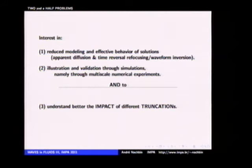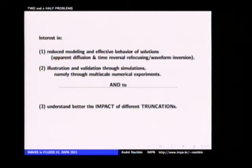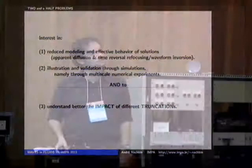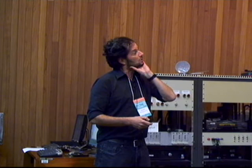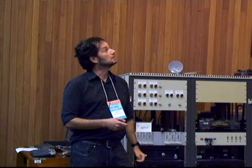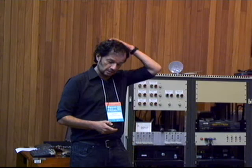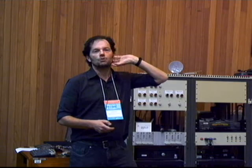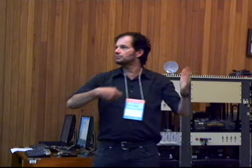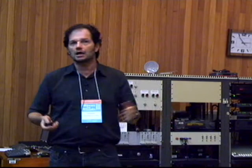My interest has been in reduced modeling — starting with potential theory and getting simplified Boussinesq-like equations in the presence of highly disordered topography. There are many interesting phenomena: apparent diffusion, time-reversal refocusing (which is the waveform inversion process to recover the initial condition), and using multiple scales with fine topographic features over large propagation distances. I'm also very much interested in understanding the impact of different truncations and asymptotic simplifications on the equations and on numerics — for surface waves, internal waves, and so on.